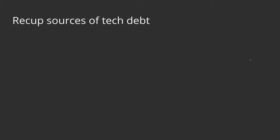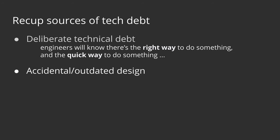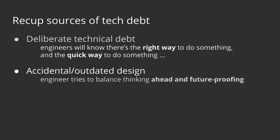Let's recap what we learned from our previous talk. We discussed different sources of technical debt. We named one type 'deliberate technical debt' — it's when we know how to do something right but are forced to do it quickly. It's very obvious and we can easily track it.